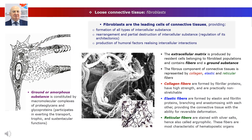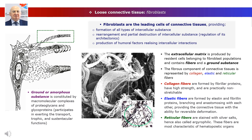Elastic fibers are formed by elastin and fibrillin proteins, branching and anastomosing with each other, providing the connective tissue with the ability for reversible deformation. Reticular fibers are stained with silver salts, hence also called argyrophilic. These fibers are most characteristic of hematopoietic organs — red bone marrow, lymph nodes, and spleen — where they form three-dimensional networks, provide support, and create an optimal environment for the developing blood cells.